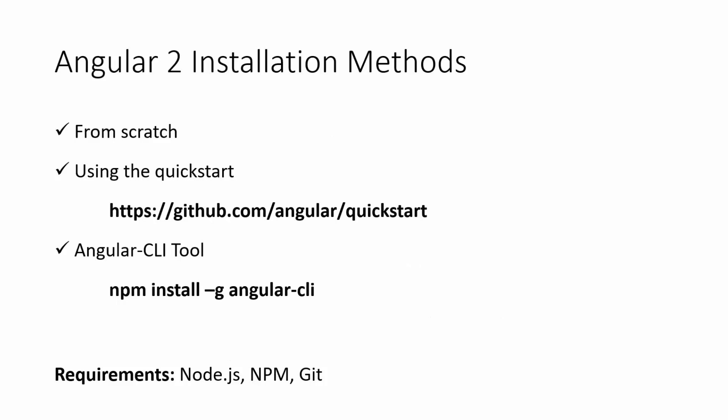Now we're just about done with the slides. Before we get started, let's go over installation methods. You can create an Angular 2 app from scratch using npm, but it can get difficult. I suggest using the Quick Start — the GitHub link is github.com/angular/quickstart. There's also an Angular CLI tool you can install with npm globally; we're not using the CLI in this video, but I have other videos where we do. The requirements are Node.js, NPM (which comes with Node.js), and Git.